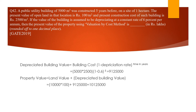The depreciated building value formula is: Depreciated Value = Building Cost × (1 − Depreciation Rate)^n. Building cost = 5,000 × 2,500. Depreciation rate = 0.06, raised to the power of 5 years. This gives a depreciated building value of ₹91,25,000. For land value: one hectare = 10,000 square meters, so land value = 10,000 × 100 = ₹10,00,000. Total property value = ₹10,00,000 + ₹91,25,000 = ₹1,01,25,000.